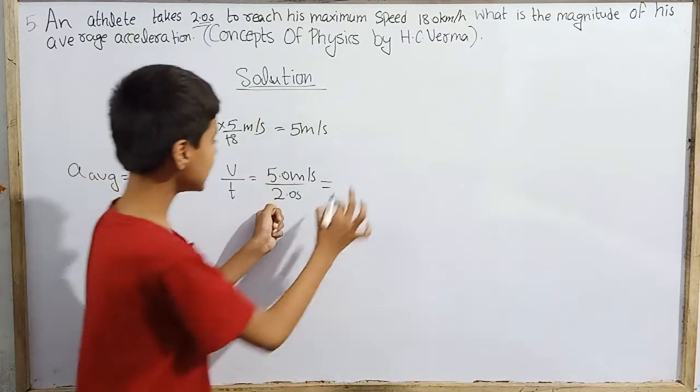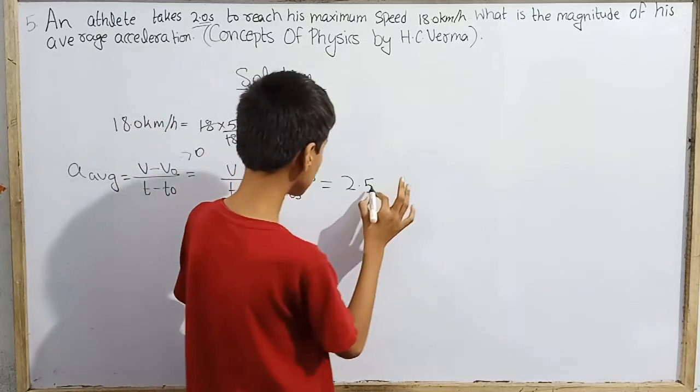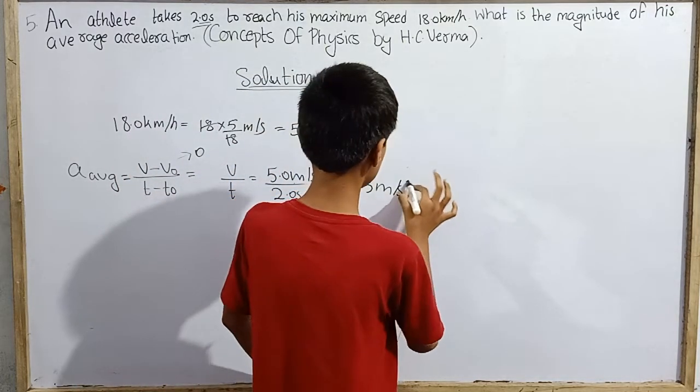So we divide here. This is what? This is 2.5 in 2 significant figures, and as it should be, meters per second squared.